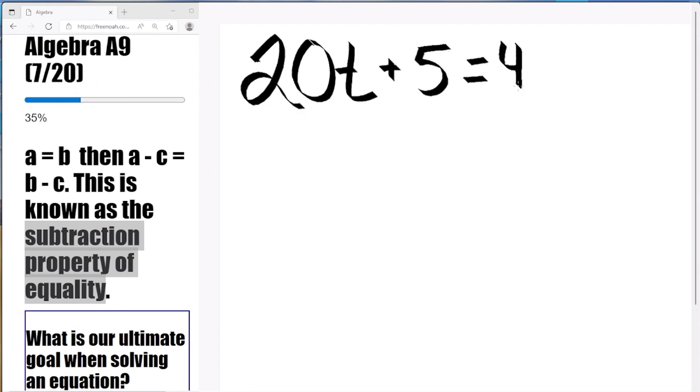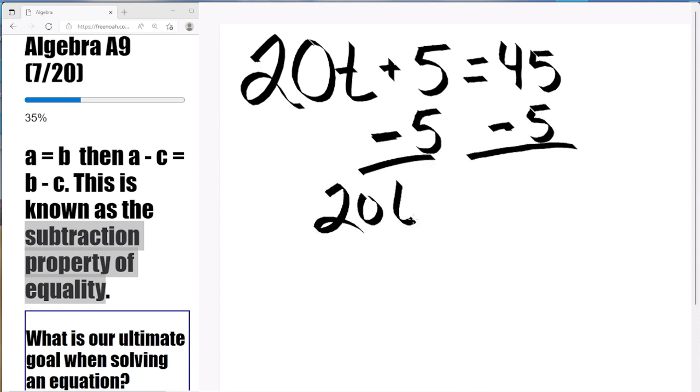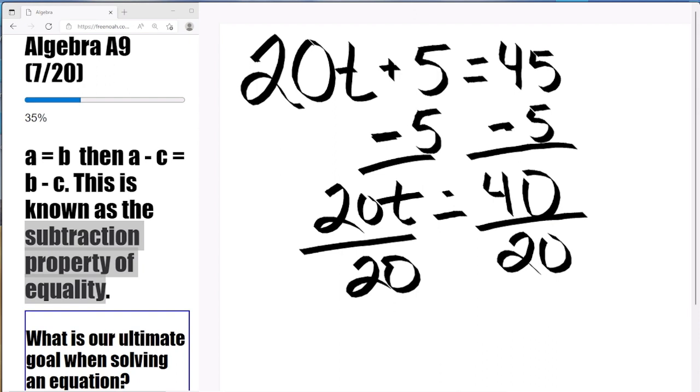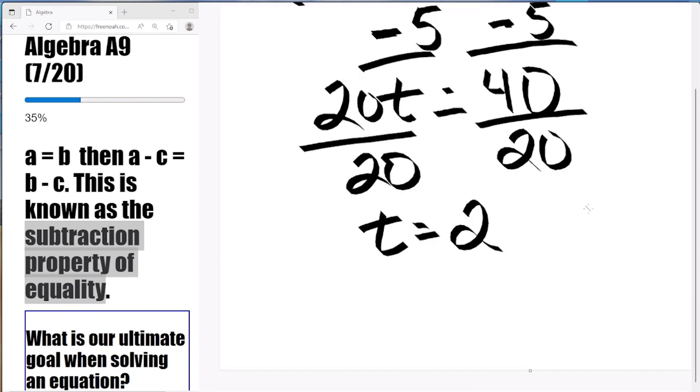Alright, 20T plus 5 equals 45. Well, we're going to subtract 5 on both sides. That leaves the 20T by itself, right? And this 45 minus 5 equals 40. Let's divide both sides by 20 and we're left with T by itself on the left side and 40 divided by 20 on the right side is 2. So T equals 2,